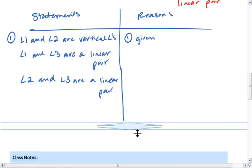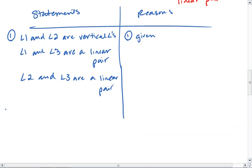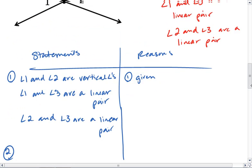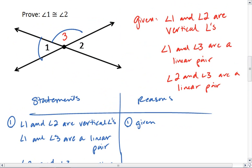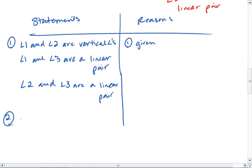We now know that because angle 1 and angle 3 are a linear pair, this means that the measure of angle 1 plus the measure of angle 3 equals 180 degrees. This is the definition of a linear pair.